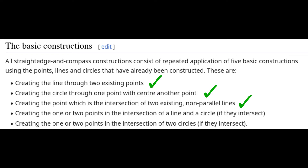Find the intersections of a line and a circle, and find the intersections of two circles. These last two are the only things that we need to prove that we can do with just a straight edge and using the compass only once.